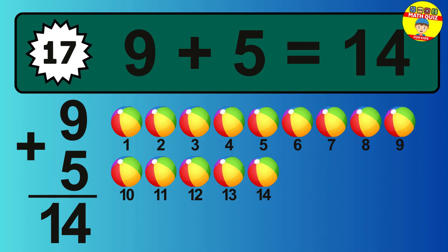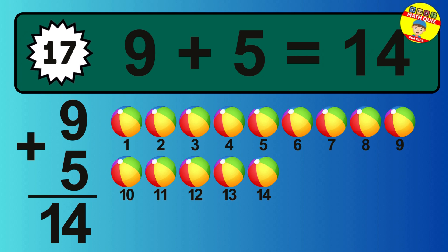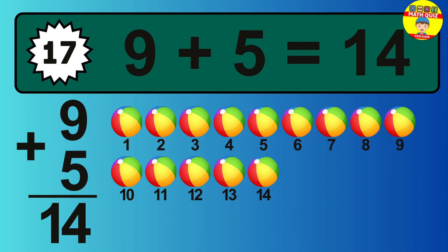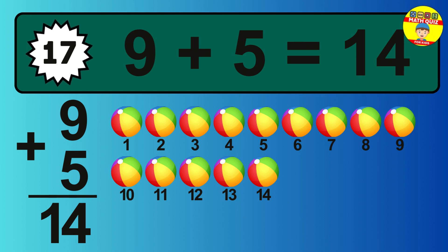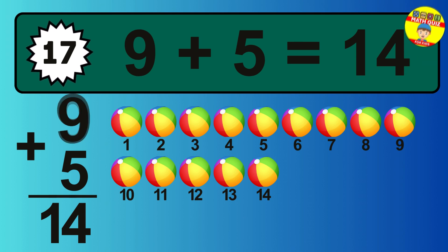Let's count it: 1, 2, 3, 4, 5, 6, 7, 8, 9, 10, 11, 12, 13, 14. So the answer is 9 plus 5 is 14.